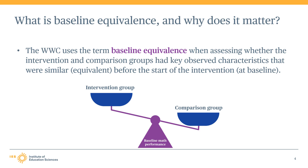In other words, the estimated impact of the intervention might be biased. Recall that bias refers to a systematic difference between the true impact of the intervention and the estimated impact, which can lead to incorrect conclusions about the effect of the intervention.